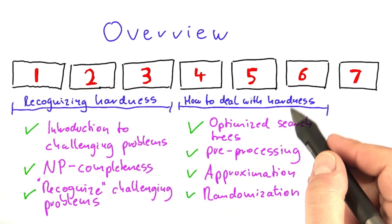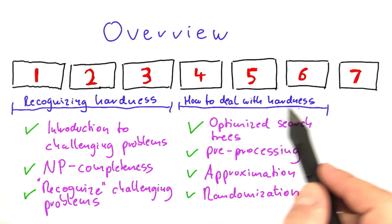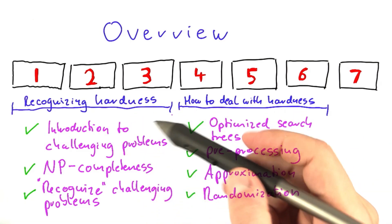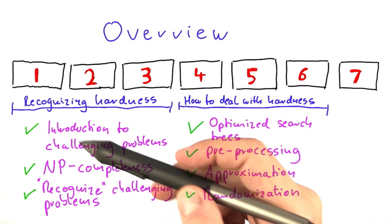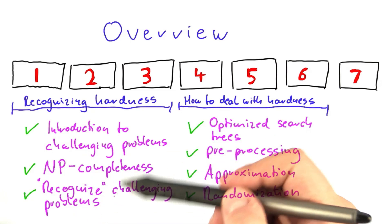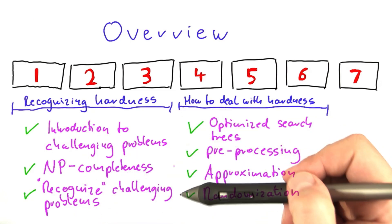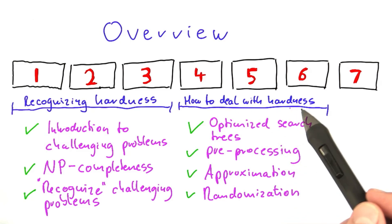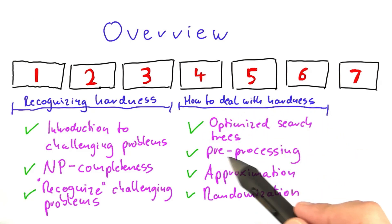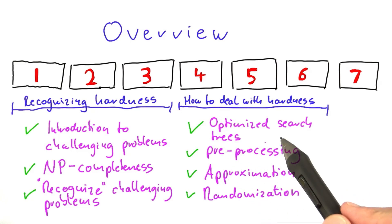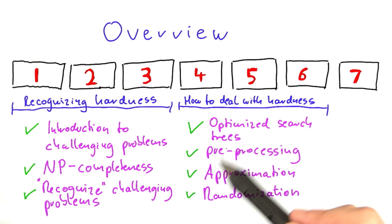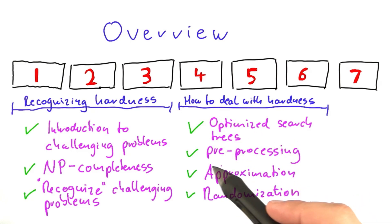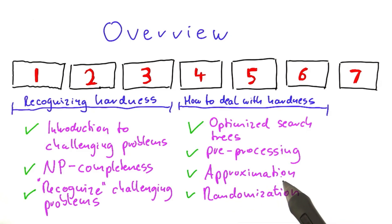In units 4 to 6 we're then going to discuss what to do if you encounter a hard problem, because many people, once they've recognized that their problem is hard to solve, actually tend to stop. These units will give you various techniques for solving hard problems — solving them very exactly using techniques such as optimized search trees and preprocessing, but also solving them almost optimally using techniques such as approximation and randomization.